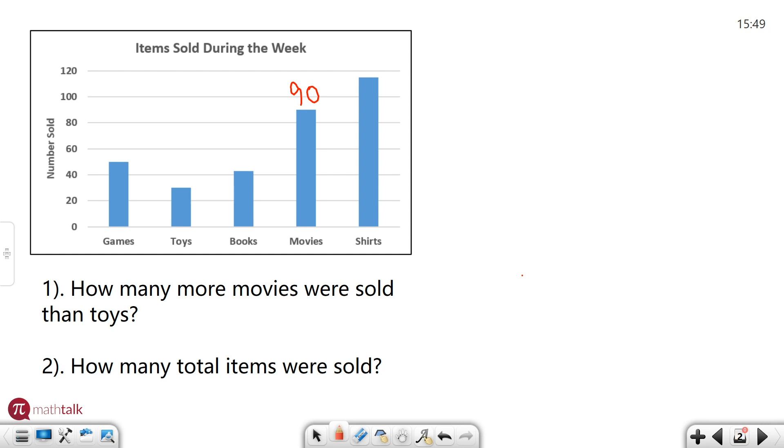Halfway between 80 and 100 is 90, so that's probably about right. And then toys, if we go to my toys category here, it looks like it's halfway between 20 and 40, so I'm going to call it 30. So how many more movies than toys? Well, 90 minus 30 is going to get me 60. So let me do the math there. 90 minus 30 is 60. So it looks like there are 60 more movies than toys.